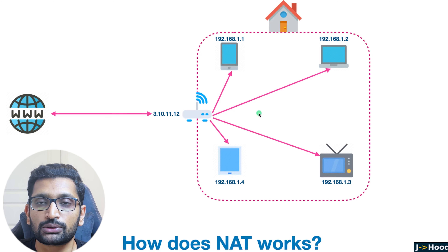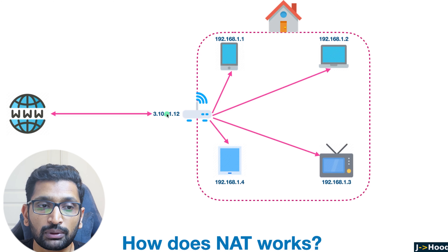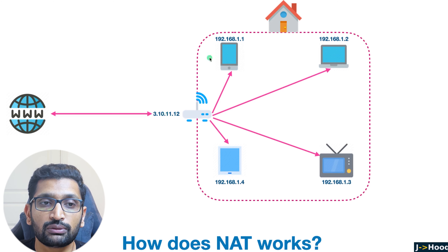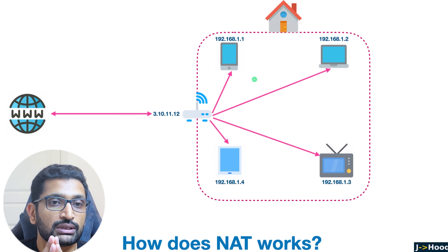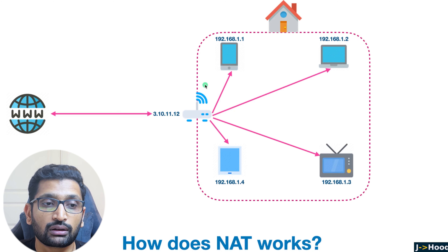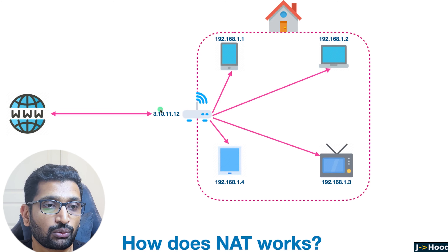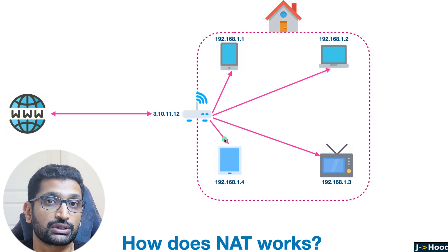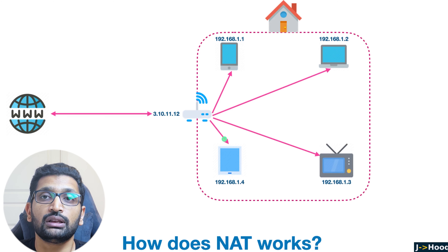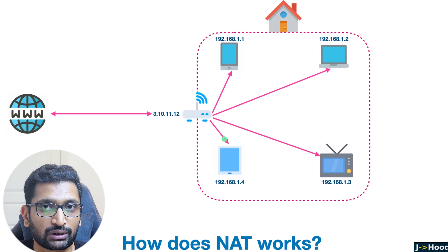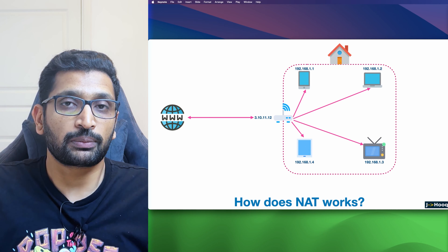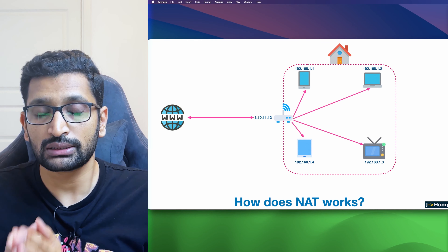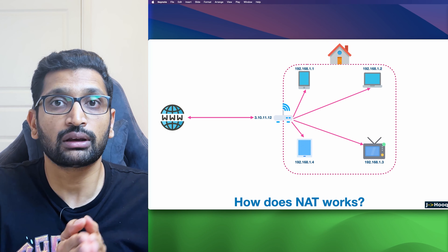All of this is possible with network address translation. The benefit is that you only have one public IP address on the router, and the rest are local private addresses not visible to the outside world. Instead of needing five public IP addresses, we reduce that to a single public IP assigned to the router.